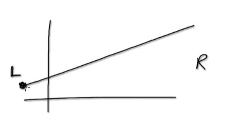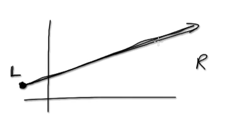So remember in the previous video, I gave you some practice, but all the ones I gave you, they were all positive gradient. What that means is, you've got a straight line like this, and with a straight line, we always travel from left to the right.